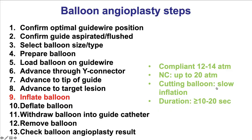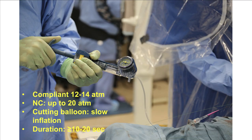Step number nine is to inflate the balloon. Typically the inflation pressure is 12 to 14 atmospheres for compliant balloons and up to 20 atmospheres for non-compliant balloons. For cutting balloons, inflation should be very slow to allow unwrapping of the blades from the balloon folds, and the duration should be more than 10 to 20 seconds. Some operators use the indeflator pressure indicator — if there continues to be a drop in pressure, the vessel is still expanding and longer inflation is needed. It is important to look at the indeflator and reach the target pressure.